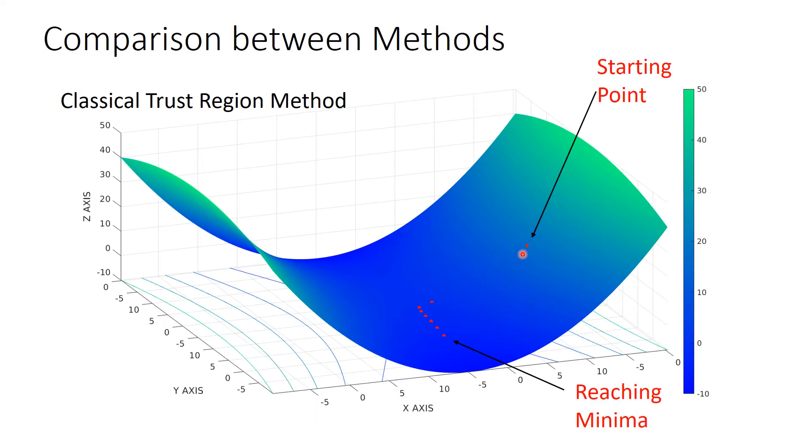Classical trust region method. As you can see from the graph, that function reaches to minima with very few number of iterations.